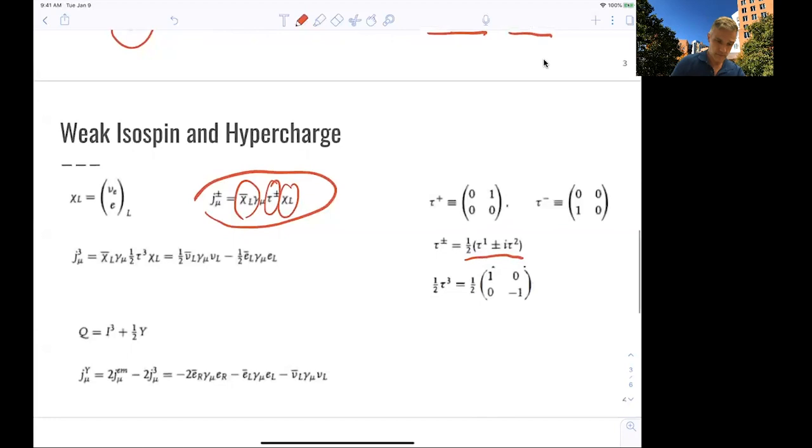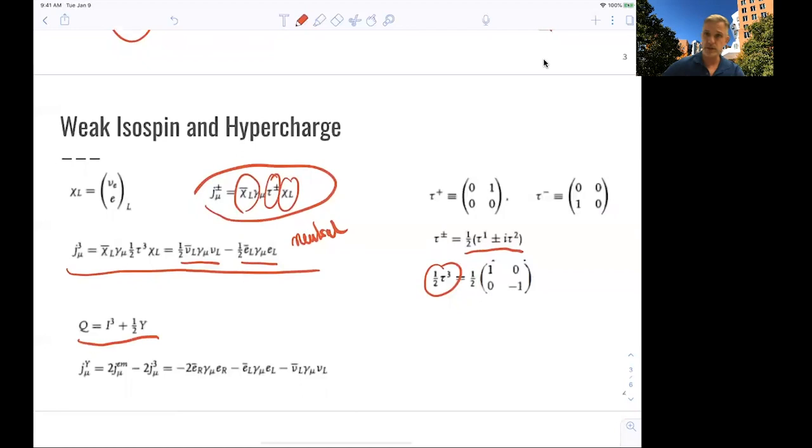Now we can write this current here as a third component. When we write down the third component of this current using tau 3 here, we find something which looks like a neutral current. So this is something like a neutral current. There we have a neutrino coupling to a neutrino and the left-handed electron coupling to a left-handed electron. I have a vertex vector where there's an interaction going on. This is not quite the full story yet.